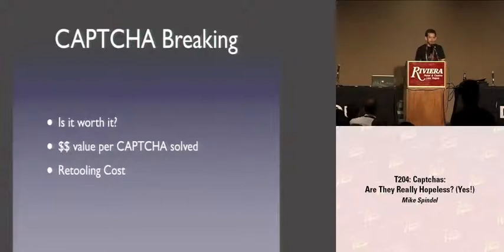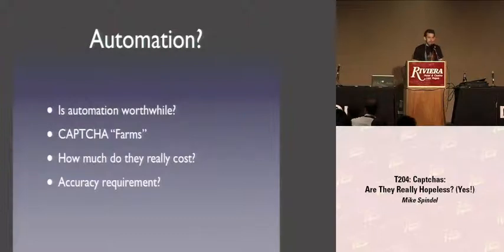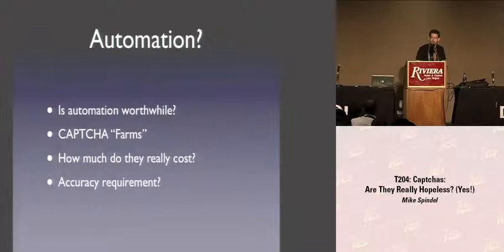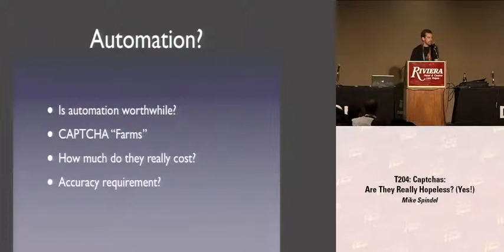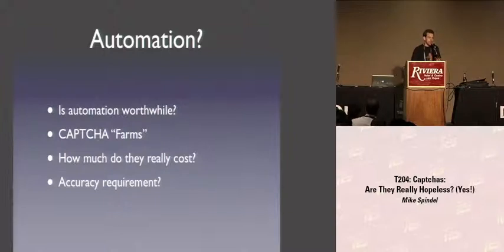The distinction between low-value and high-value targets is key to understanding what kind of threat you need to consider. For high-value targets, CAPTCHAs aren't really going to do a great job. If making a post in the personal section of Craigslist is worth ten cents and it costs one or two cents to hire a person to solve the CAPTCHA, then the CAPTCHA just doesn't matter. On the other hand, if you're a spammer trying to spam every blog on the web, you're much more interested in automating the procedure to hit a huge number of sites without paying someone one cent every single time you post.